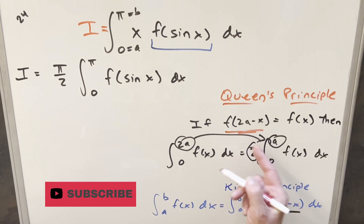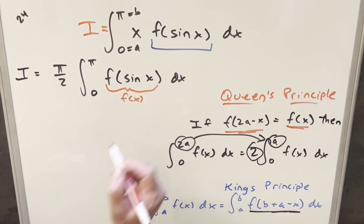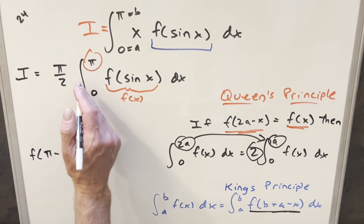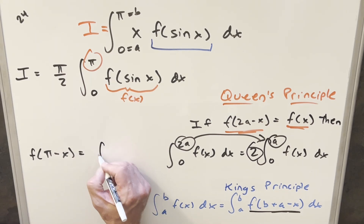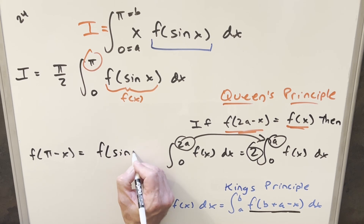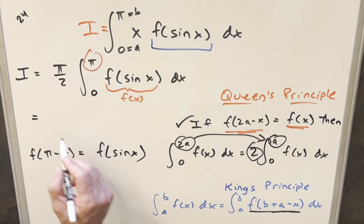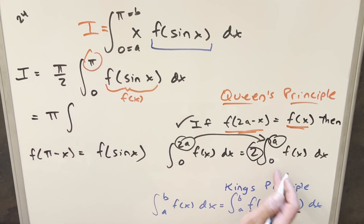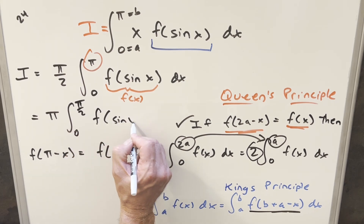To apply Queen's Principle, we need to check that f of 2a minus x equals f of x, where our f of x is f of sine x and our 2a is the upper bound pi. So we're checking f of sine of pi minus x — and we already found using the supplementary angle formula that we get back f of sine x again. So this condition is true, allowing us to pull 2 out front: pi over 2 times 2 becomes pi, and the bound cuts in half from 0 to pi over 2, giving pi times the integral from 0 to pi over 2 of f of sine of x.